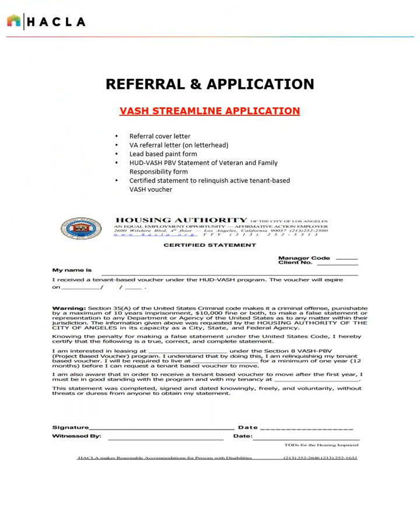Please note that if any clients hold an active tenant-based VASH voucher, they may complete a VASH streamlined application and will not need to complete a full application. The VASH streamlined application consists of a referral cover letter, the VA referral letter, a lead-based paint form, the HUD-VASH PBV Statement of Veteran and Family Responsibility Form, and also a certified statement to relinquish their active tenant-based VASH voucher.